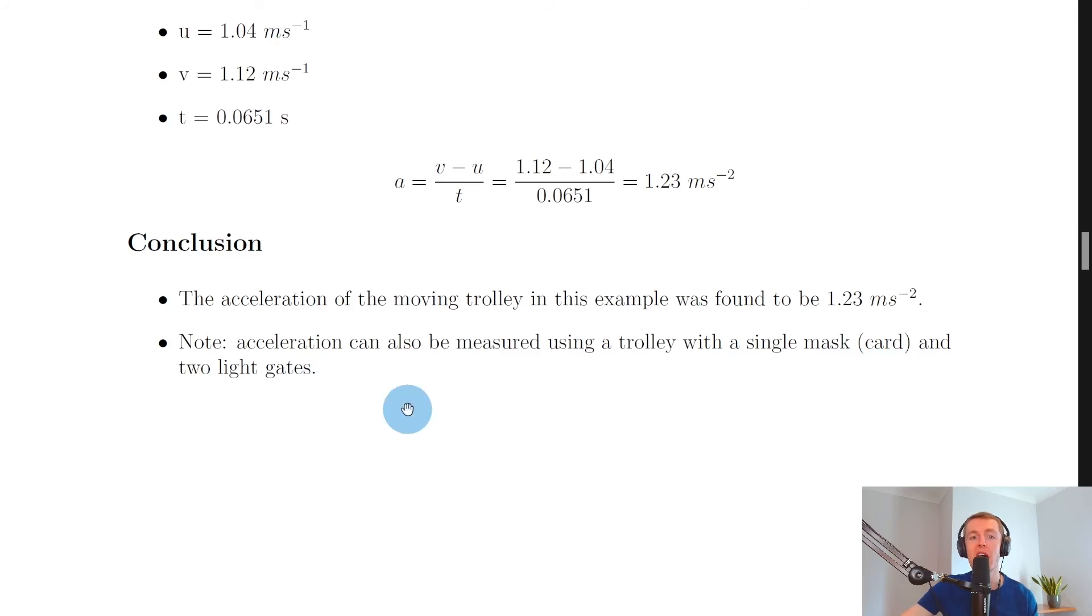So rather than just one light gate and a double mask, you could use two light gates and a single mask. And just to show you what that would look like, here's a quick simulation.